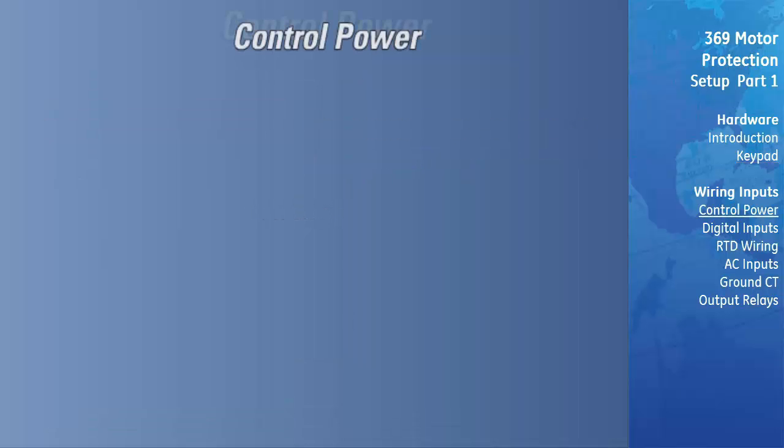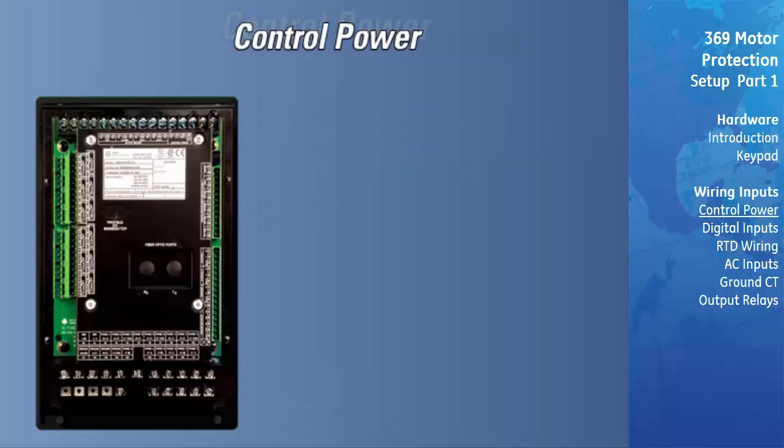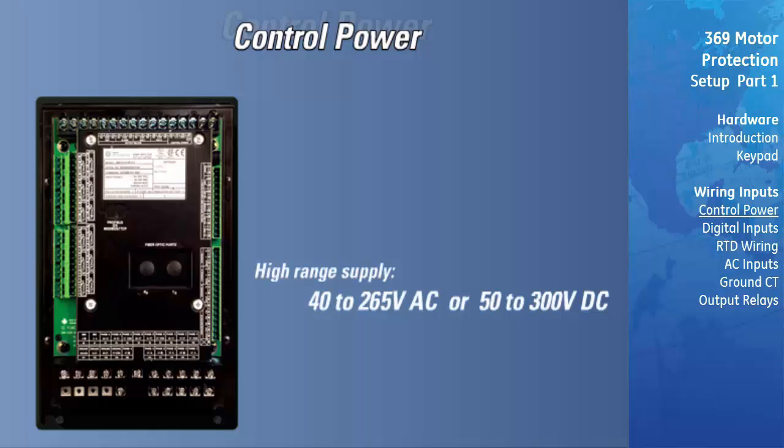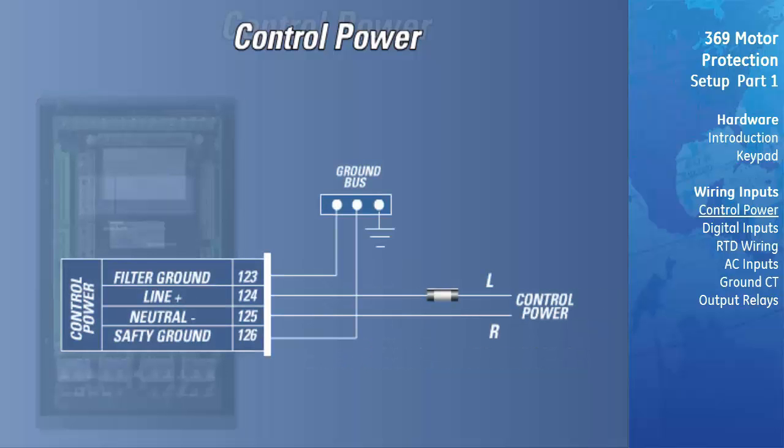The 369 is ordered with either a high range or low range power supply. The high range power supply can operate between 40 to 265 volts AC or 50 to 300 volts DC, while the low range power supply can operate between 20 to 48 volts AC or 20 to 60 volts DC. Transient energy is removed from the relay and conducted to ground via the ground terminal. This terminal must be connected to the cubical ground bus using a number 10 American gauge wire or a ground braid. The supply is protected via a 3.15 amp slow blow replaceable fuse.